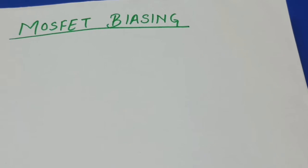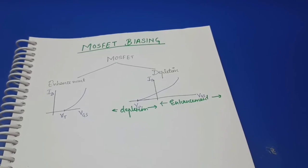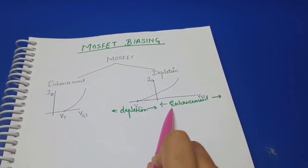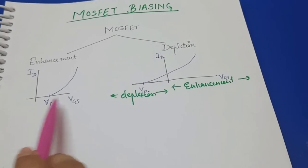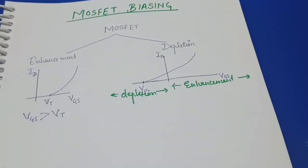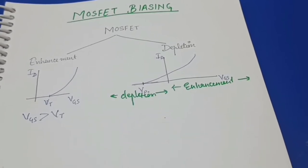Welcome back to the channel. In this video we are going to start with MOSFET biasing. Before discussing MOSFET biasing we have to discuss the types of MOSFET. There are two types: enhancement MOSFET and depletion MOSFET. These are their transfer characteristics. In enhancement MOSFET, the MOSFET conducts only when VGS, the gate to source voltage, is greater than the threshold voltage.